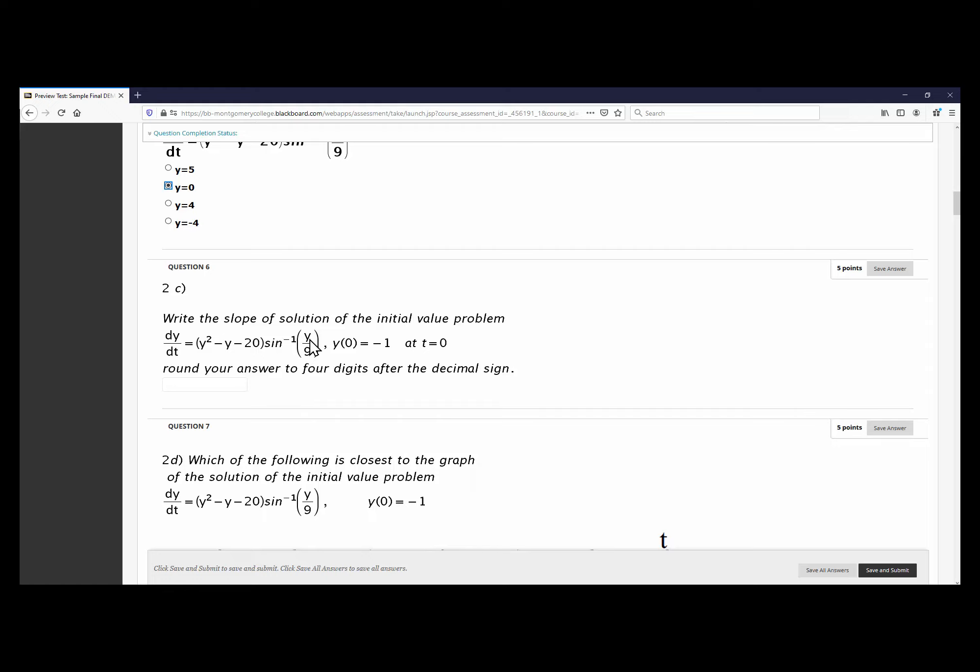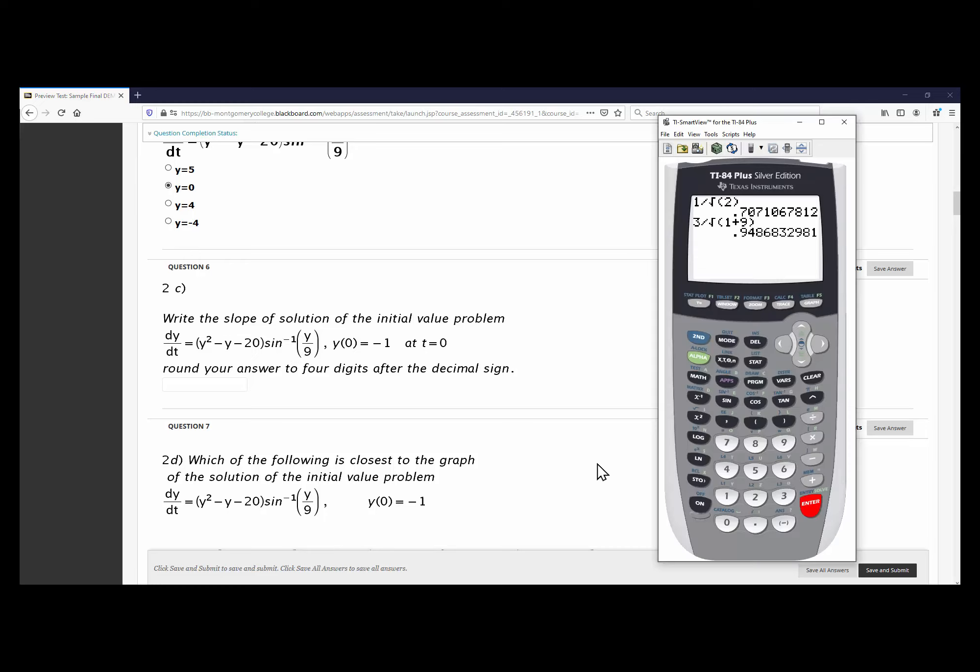So what all that we have to do is substitute y equals negative 1 in here. So let's do that, and we can use our calculator to do that. That is, we got negative 1 squared is 1, then negative 1 is positive 1, then we got negative 20, and we have to make sure that we are in the radian mode. Yes, we are. So then we got sine inverse negative 1 over 9. So let's see what we get here.